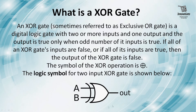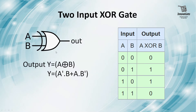The logic symbol for a two-input XOR gate has A and B as the inputs and Y as the output. The Boolean expression of an XOR gate is Y equals A XOR B. And if we expand the expression, it is Y equals A-complement dot B plus A dot B-complement.